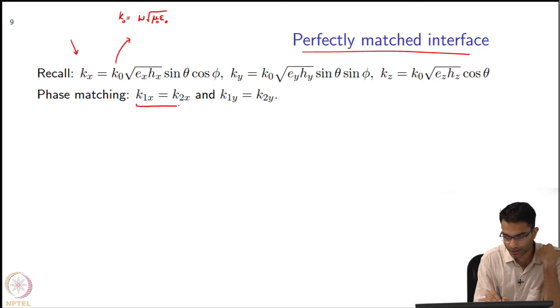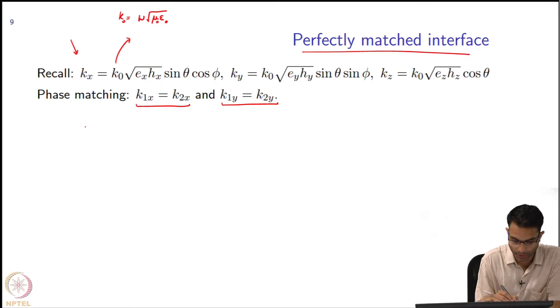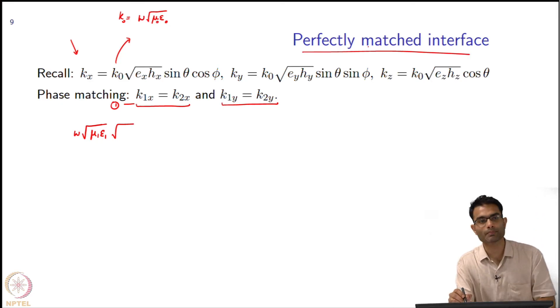So now phase matching condition required this and this, right, because the phases have to rotate at the same speed. What does this tell us? We will just substitute over here. The first part is going to be omega square root mu_1 epsilon_1. I am doing the first one. Then what do I have? Square root of e_x h_x.